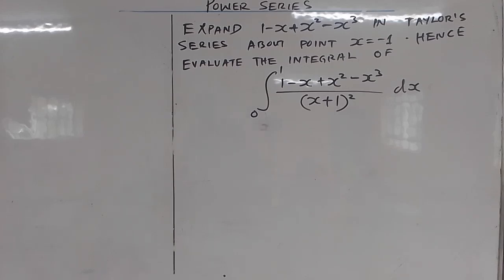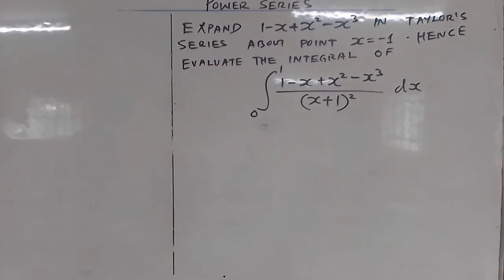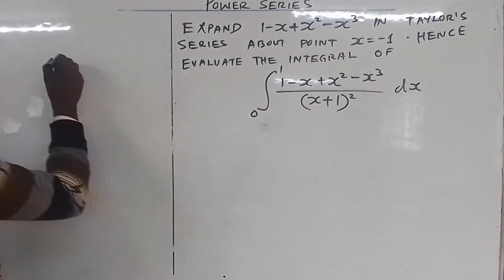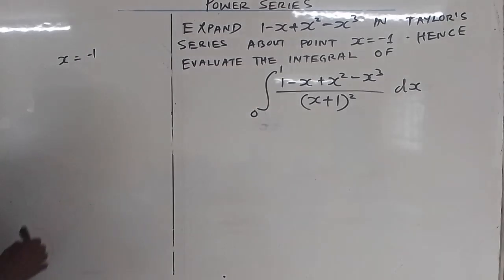In this next example, expand 1 minus x plus x squared minus x cubed in Taylor series about the point x equals negative 1, hence evaluate the integral from 0 to 1. We have 1 minus x plus x squared minus x cubed, all over x plus 1 squared, with respect to x. Now, for you to expand this in Taylor series, the first thing you need to do is note the point where x is equal to negative 1.